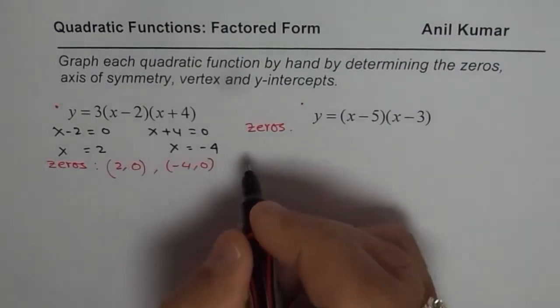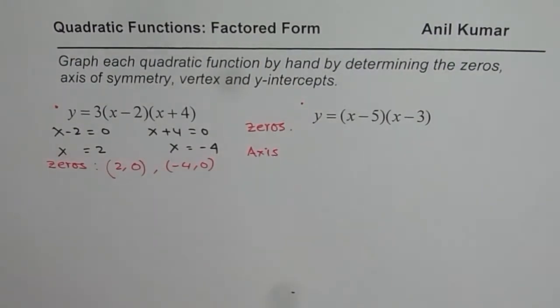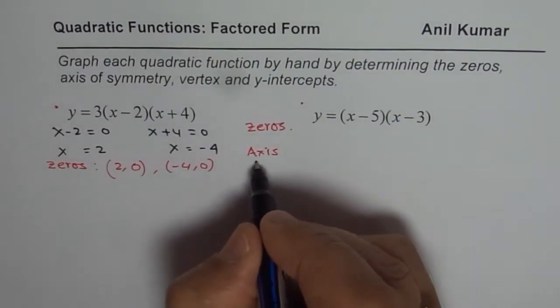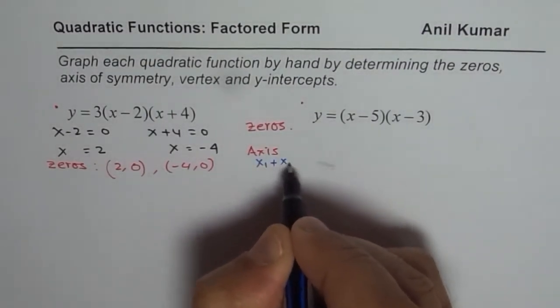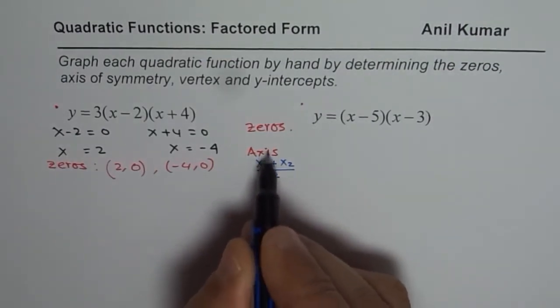To find the axis of symmetry - what is axis of symmetry? Axis of symmetry, as you know, is the average value of the zeros. So if my zeros are at x₁ and x₂, you add them and divide by 2.